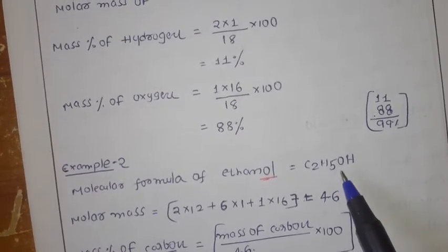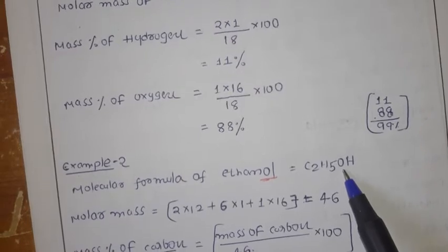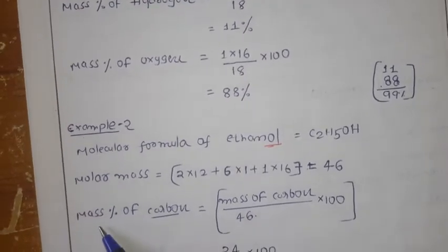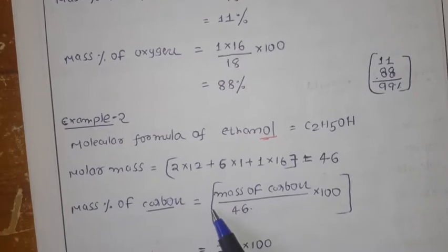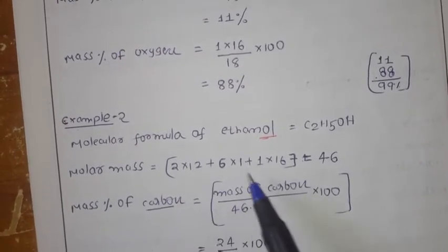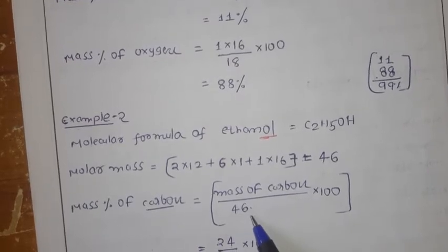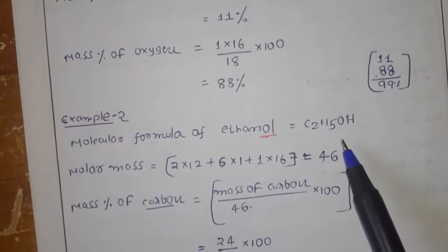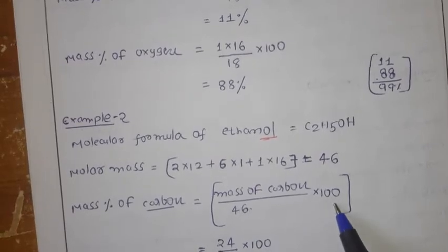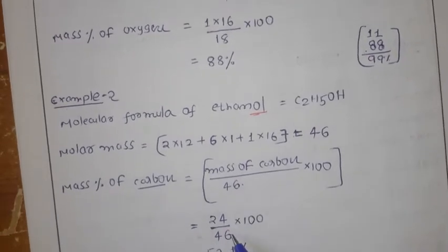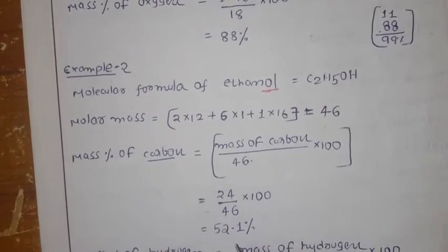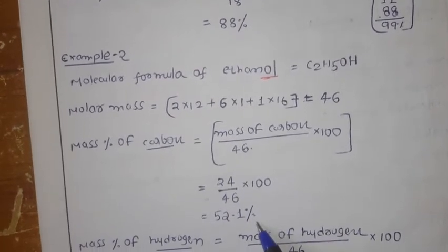Now you can calculate the percentage composition using the formula. If I ask how much percentage of carbon is there, the formula is: mass of carbon divided by the molar mass of ethanol, into 100. The molar mass of ethanol we already calculated as 46. So, mass percentage of carbon = 24/46 × 100 = 52.1%.